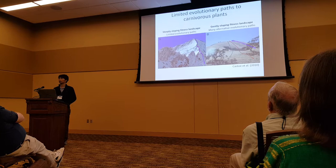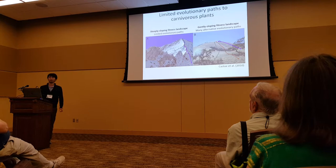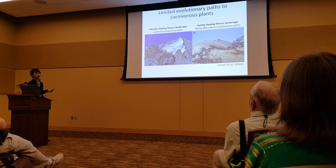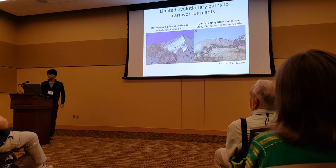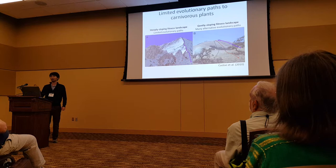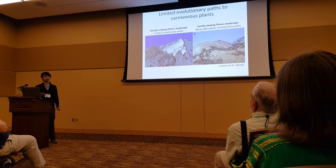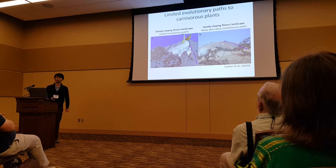I will finish with the famous metaphor of a fitness landscape. If the fitness landscape is steeply sloping, fitness optimization by stepwise random walk can find only a limited number of evolutionary pathways to attain the fitness maximum. As I showed today, digestive enzymes experienced convergent gene repurposing, convergent expression changes, and convergent amino acid substitutions. We therefore infer that the evolution of carnivorous plants was really, really limited, at least in the evolution of digestive enzymes.